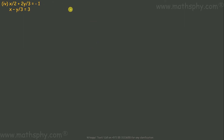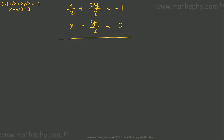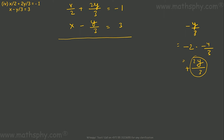The fourth one: x over 2 plus 2y over 3 equals negative 1, and x minus y over 3 equals 3. Let's try to cancel y this time. The second equation has negative y over 3. If I multiply it by negative 2, this gives positive 2y over 3, which can then be cancelled with 2y over 3 in the first equation. So let's multiply the second equation by negative 2.